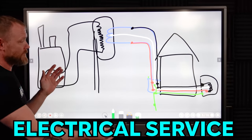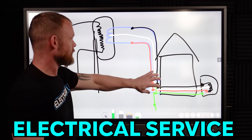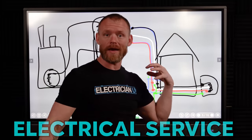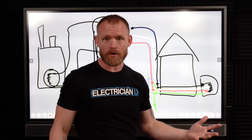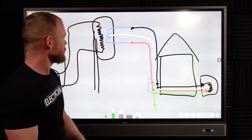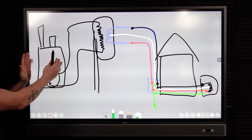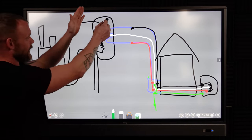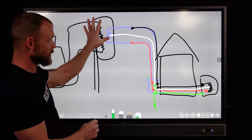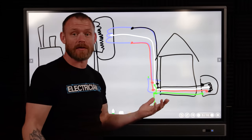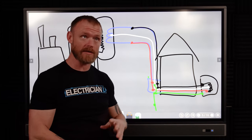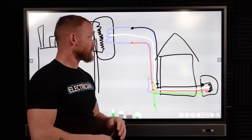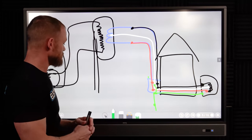An electrical service is typically the point at which electrical power comes into a building or structure. Say we have a house, a big industrial factory with a generator inside, and a pole with a transformer up on it — this is typically the entirety of an electrical system, or as much as we need to know going to a building.